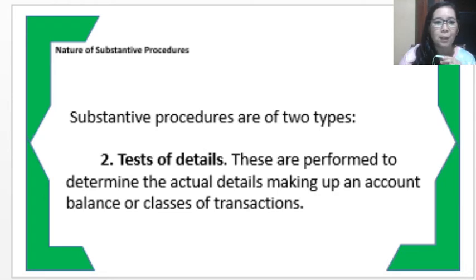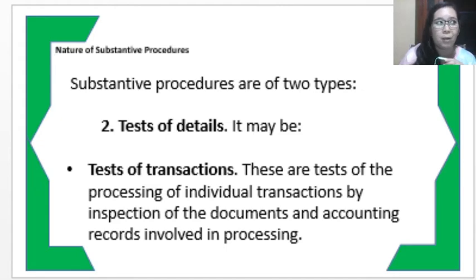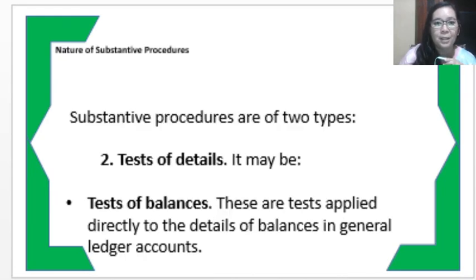The second type of substantive procedures is the test of details, which are performed to determine the actual details that make up an account balance or transaction. The test of details includes the test of transactions, which involves testing individual transactions by inspecting the documents and accounting records involved in processing, to verify they are recorded properly and measured correctly. Another type is the test of balances, which is applied to the details of balances in general ledger accounts.